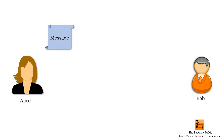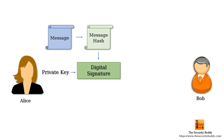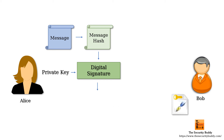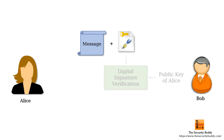In our example, Alice can generate a hash of the message and digitally sign it using her private key. Bob can then verify the digitally signed message using the public key of Alice. As the private key of Alice is secret to Alice alone, Bob can be ensured that the message is indeed sent by Alice and is unmodified after it is sent.